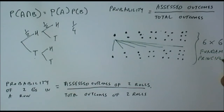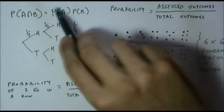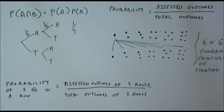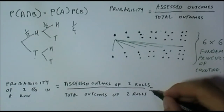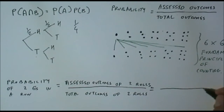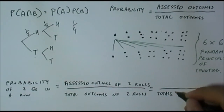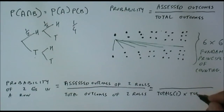If we have six options followed by each of them having another six options, we can summarize that as saying the total number of possible combinations with these two dice rolls is six times six. This principle of being able to multiply the two rows together instead of manually counting each one is referred to as the fundamental principle of counting. Because of the fundamental principle of counting, the total outcomes of the two rows is actually the totals of the first row multiplied by the totals of the second row.